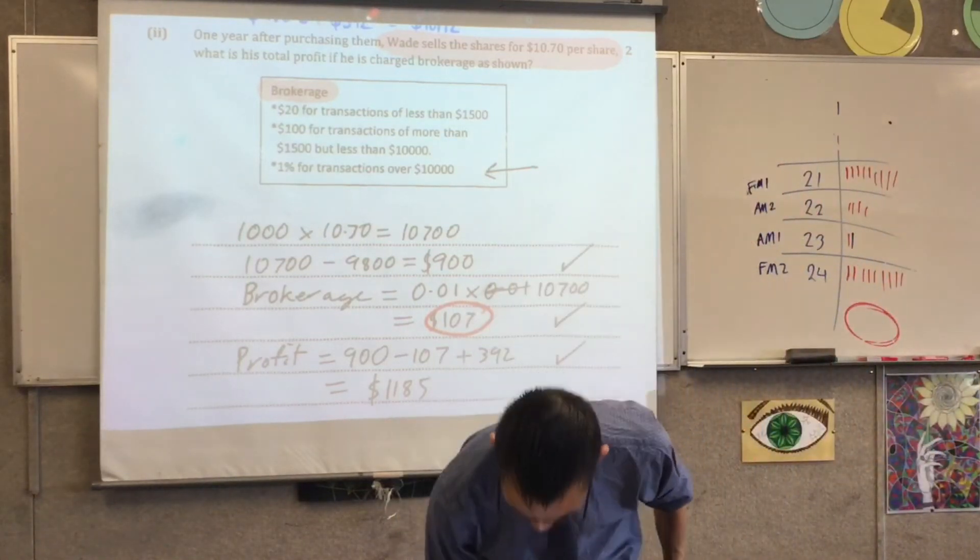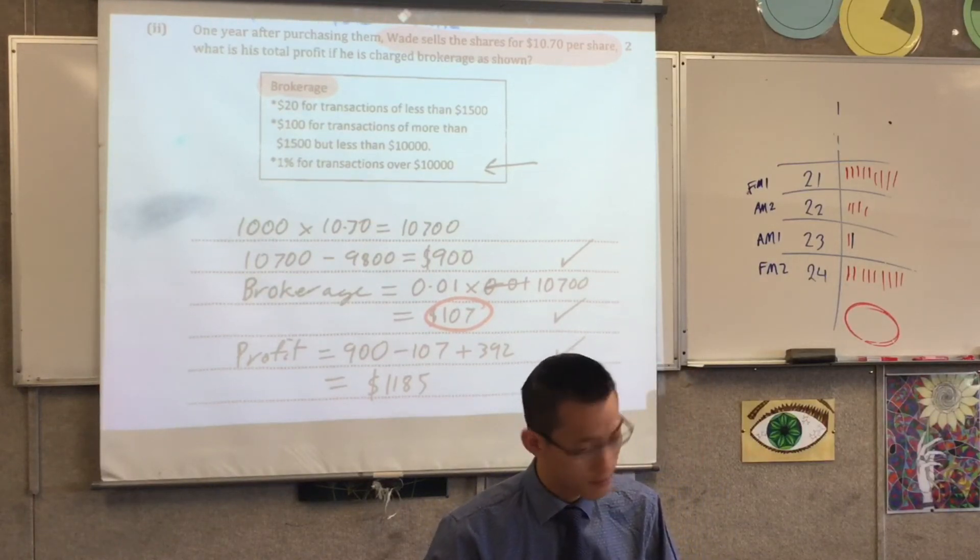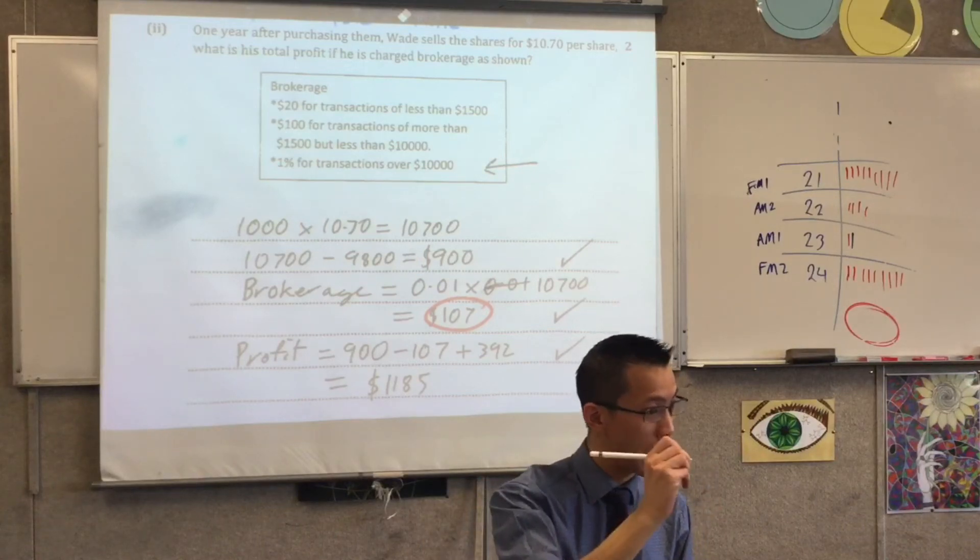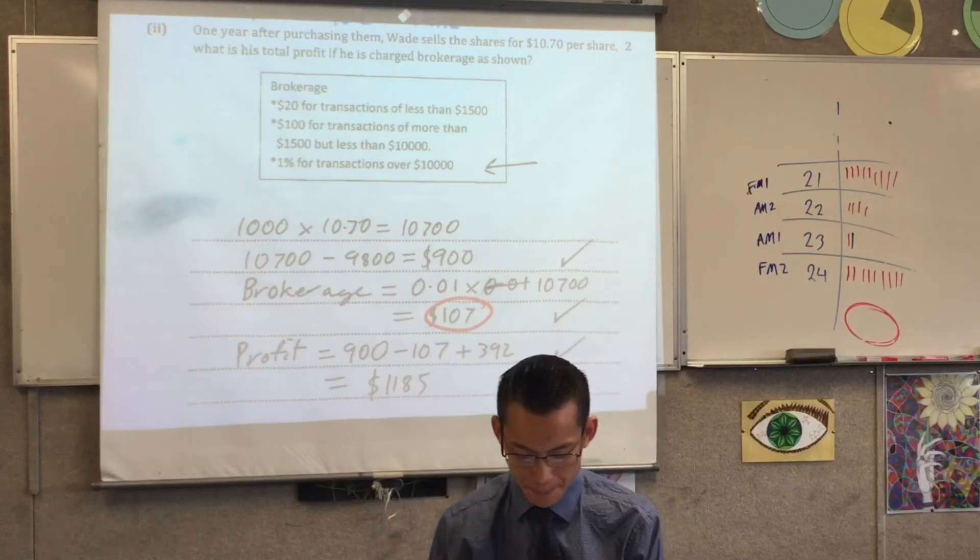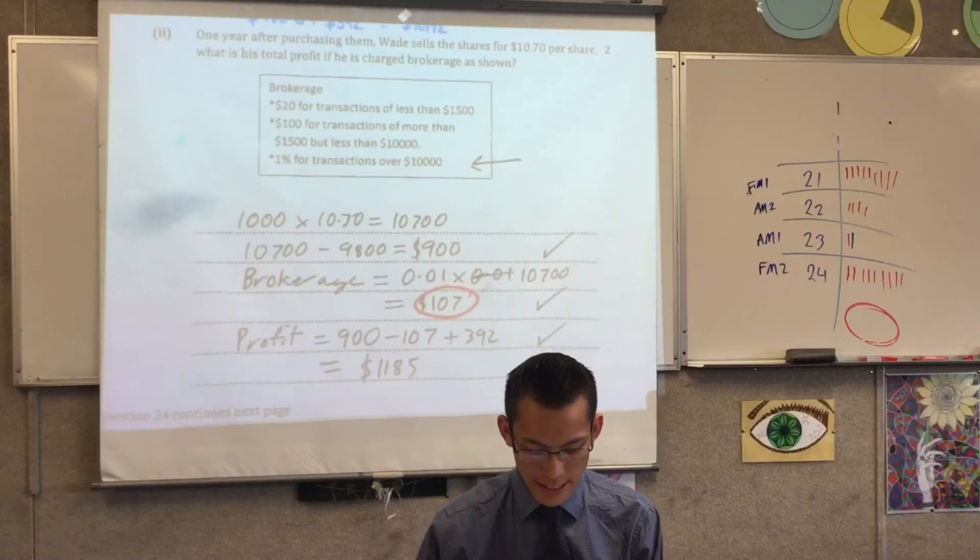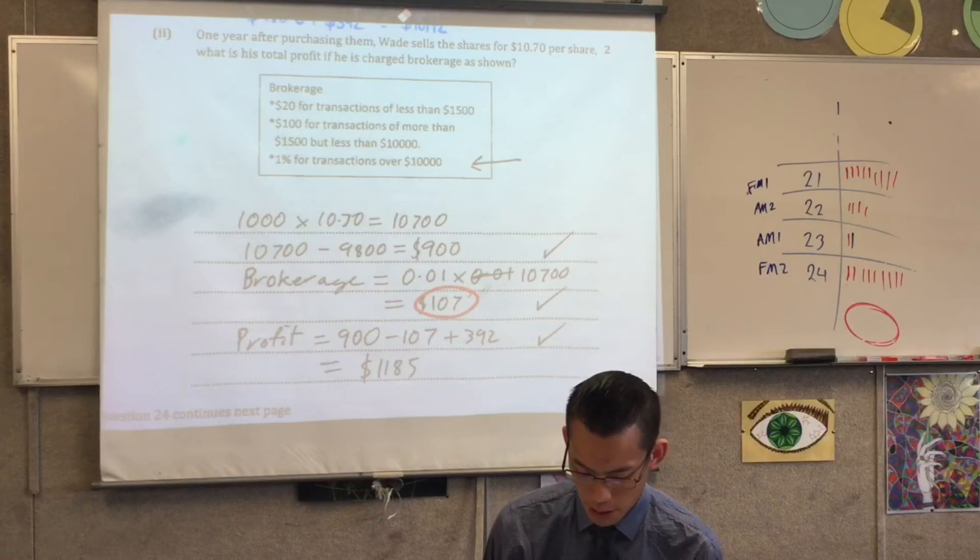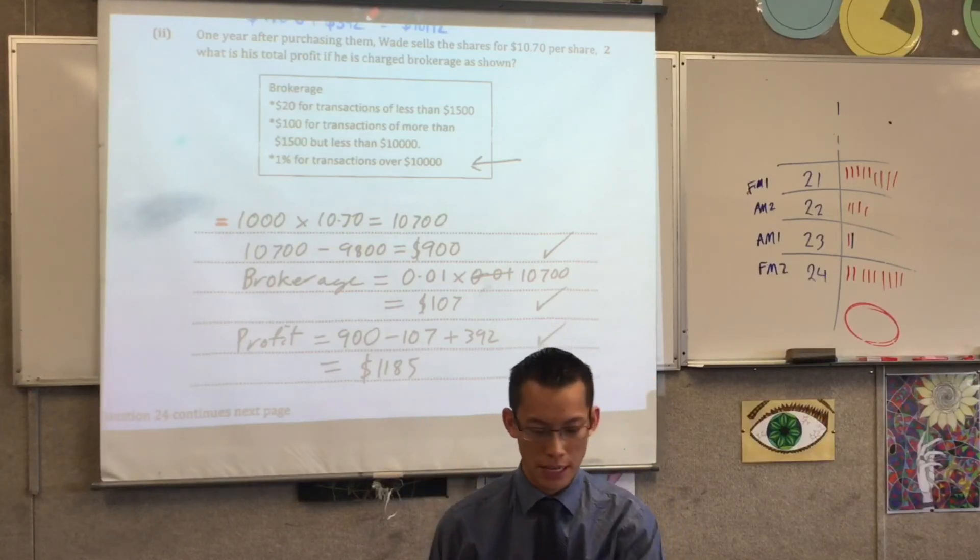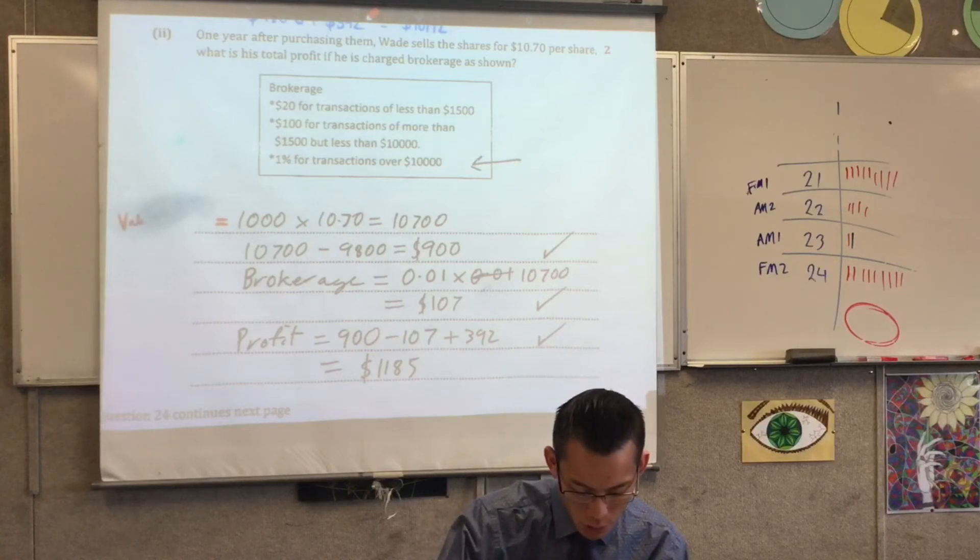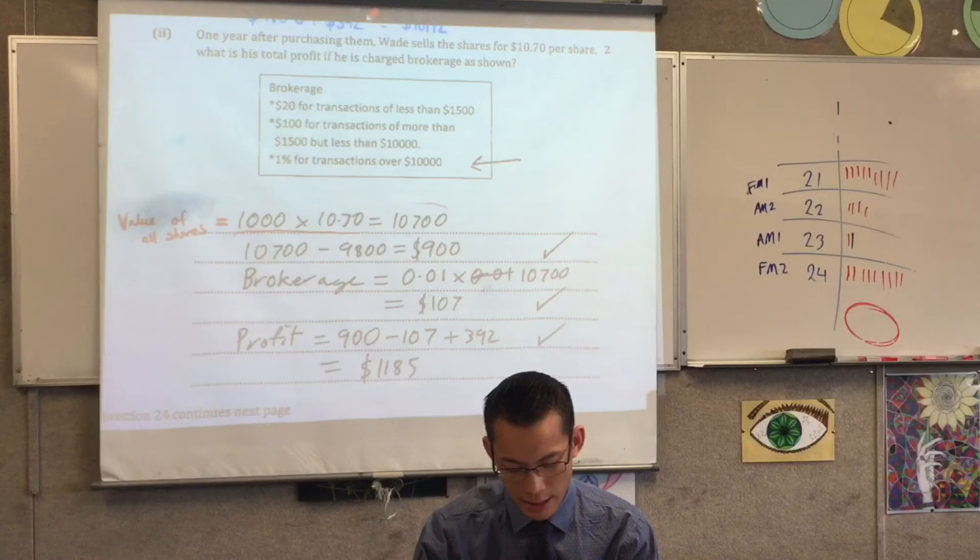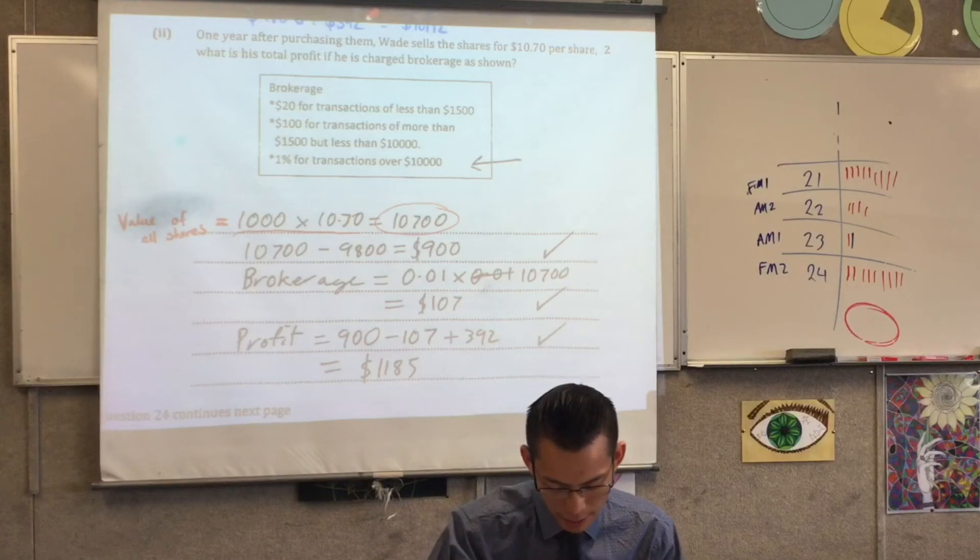All right, now let's try and piece this together. Since as a grade we did so poorly, maybe if you've not done this, pick up your pen and book and let's try to follow this through from step one. Let's start through: one year after purchasing them, Wade sells the shares for $10.70 per share. What's his total profit if he's charged brokerage as shown? One step at a time. This first line, what could we write over here? What is that first line actually representing? Very good - value of all shares. There's a thousand of them and they're worth $10.70 each, so he multiplies through and that's how he gets this number.